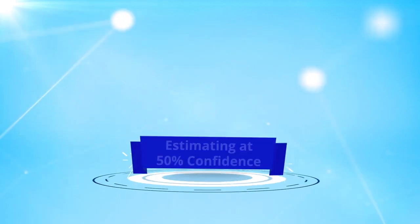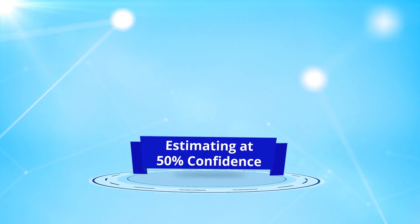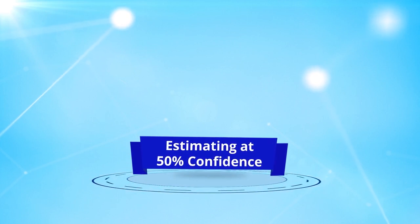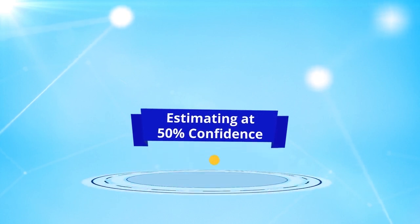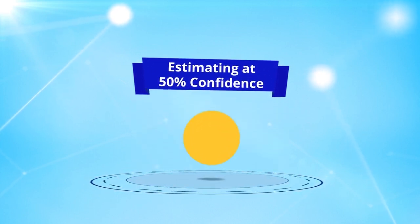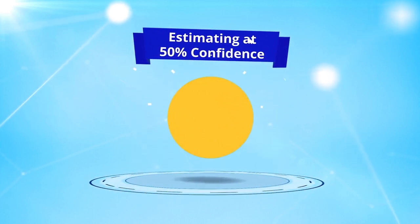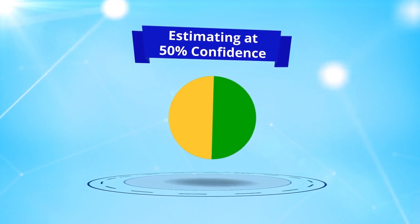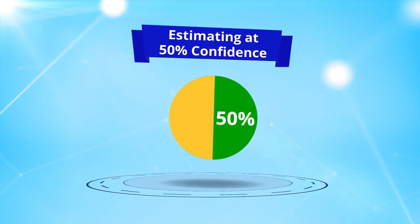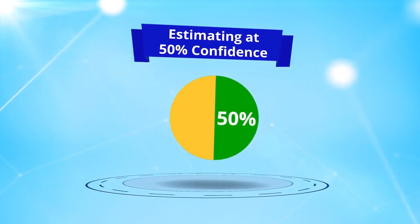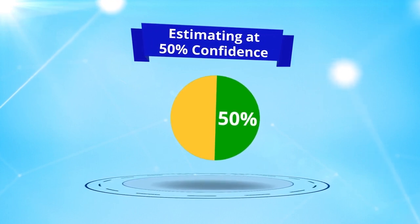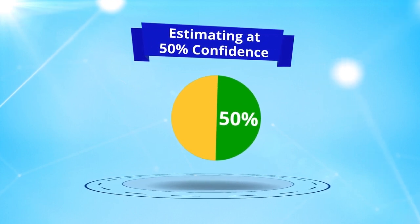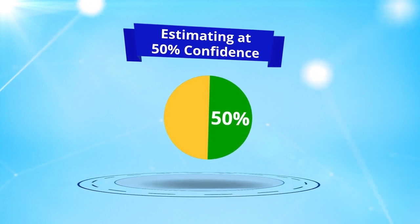Another concept is estimating at 50% confidence. This means that we come up with estimates that will likely be accurate at a 50% probability — so we're 50% confident that those estimates are correct.